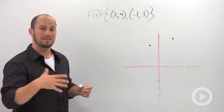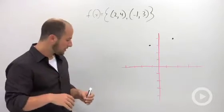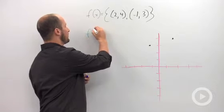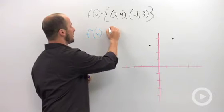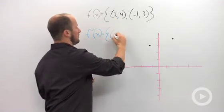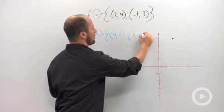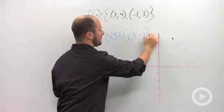And what I want to do with these is find the inverse. So remember whenever we find the inverse we just switch our x and our y value. So our inverse then is going to contain the points four, two, and the point three, negative one.